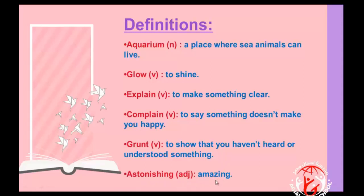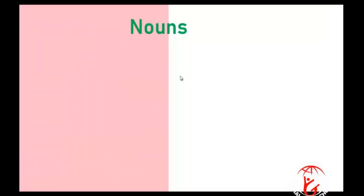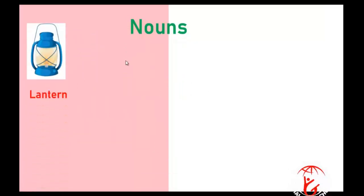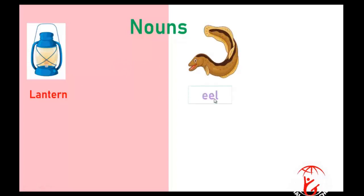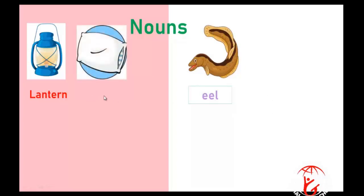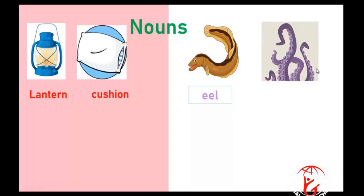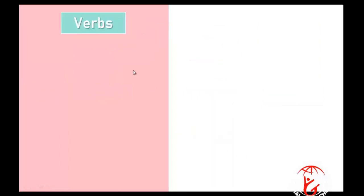The last one is 'astonishing' — it's an adjective which means amazing. When you see something amazing, you say astonishing. Now we have a group of nouns. The first one is 'lantern' — it's like a lamp. The second one is 'eel' — it's a sea creature. Another word is 'cushion,' and these are 'tentacles.'